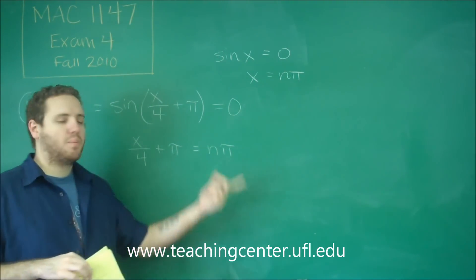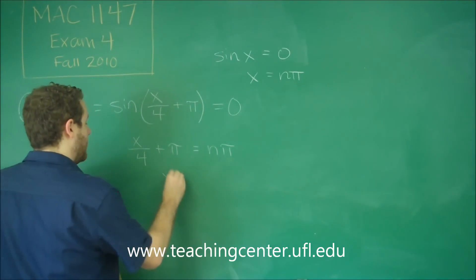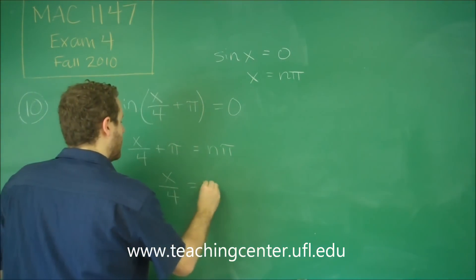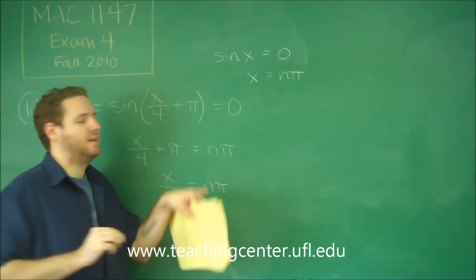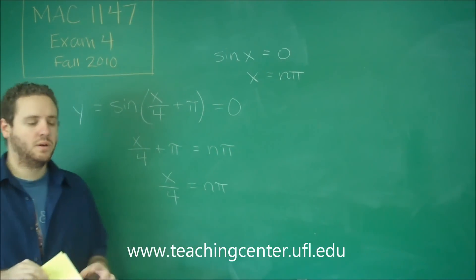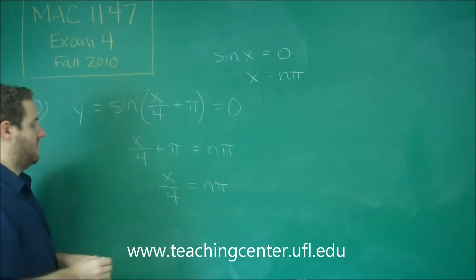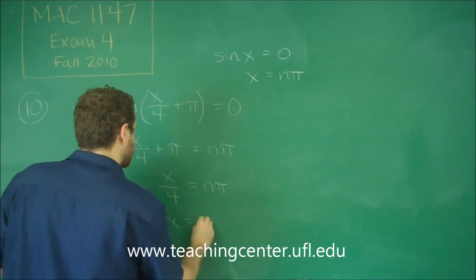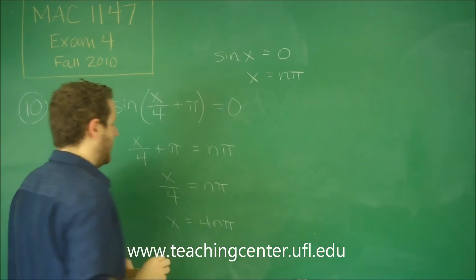If we subtract pi from that, we still have every integer of pi — that doesn't change anything. Because you can still get every possible integer if you subtract one from it. So we just have x over 4 equals n pi, and then finally x equals 4n pi.